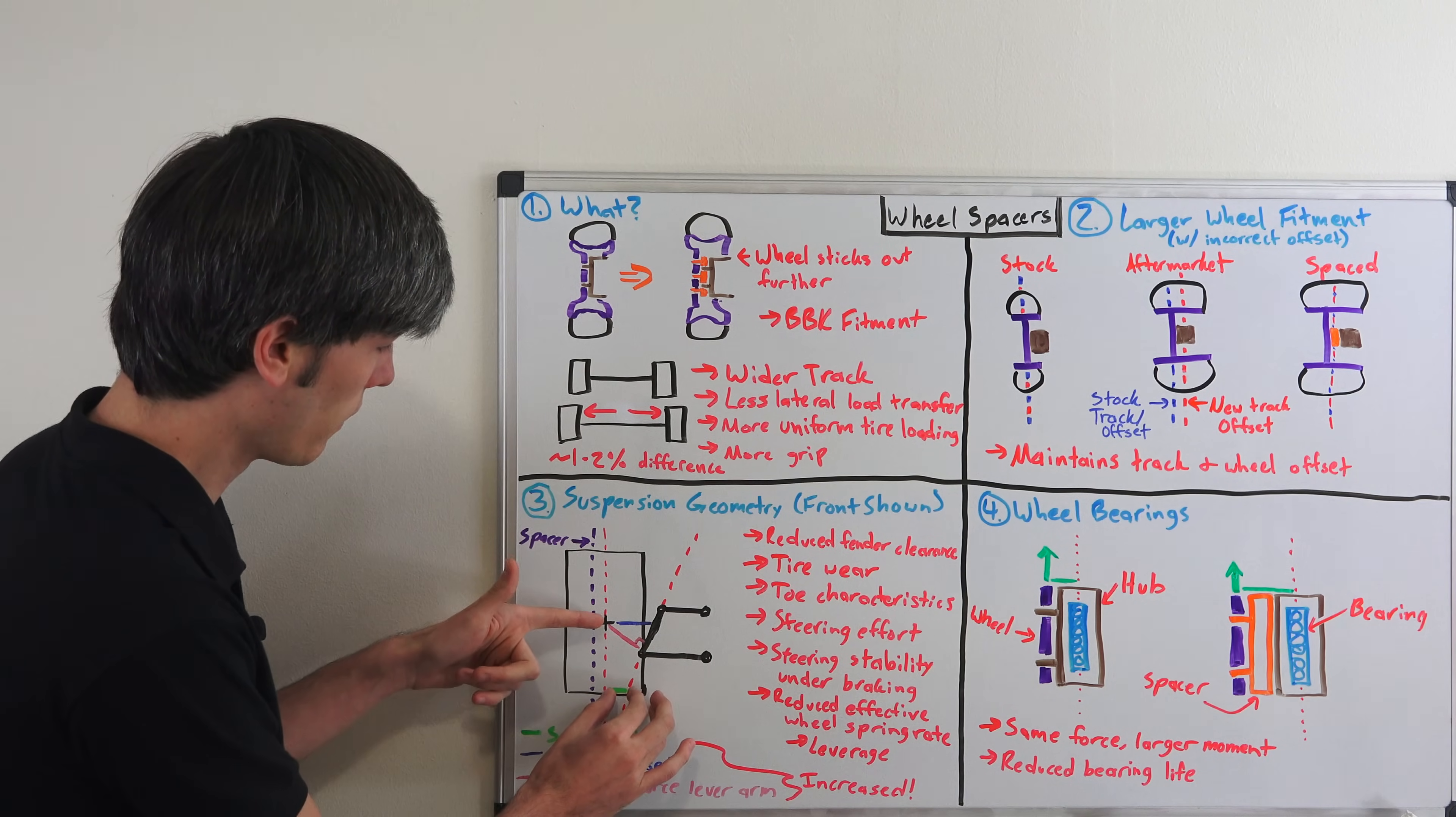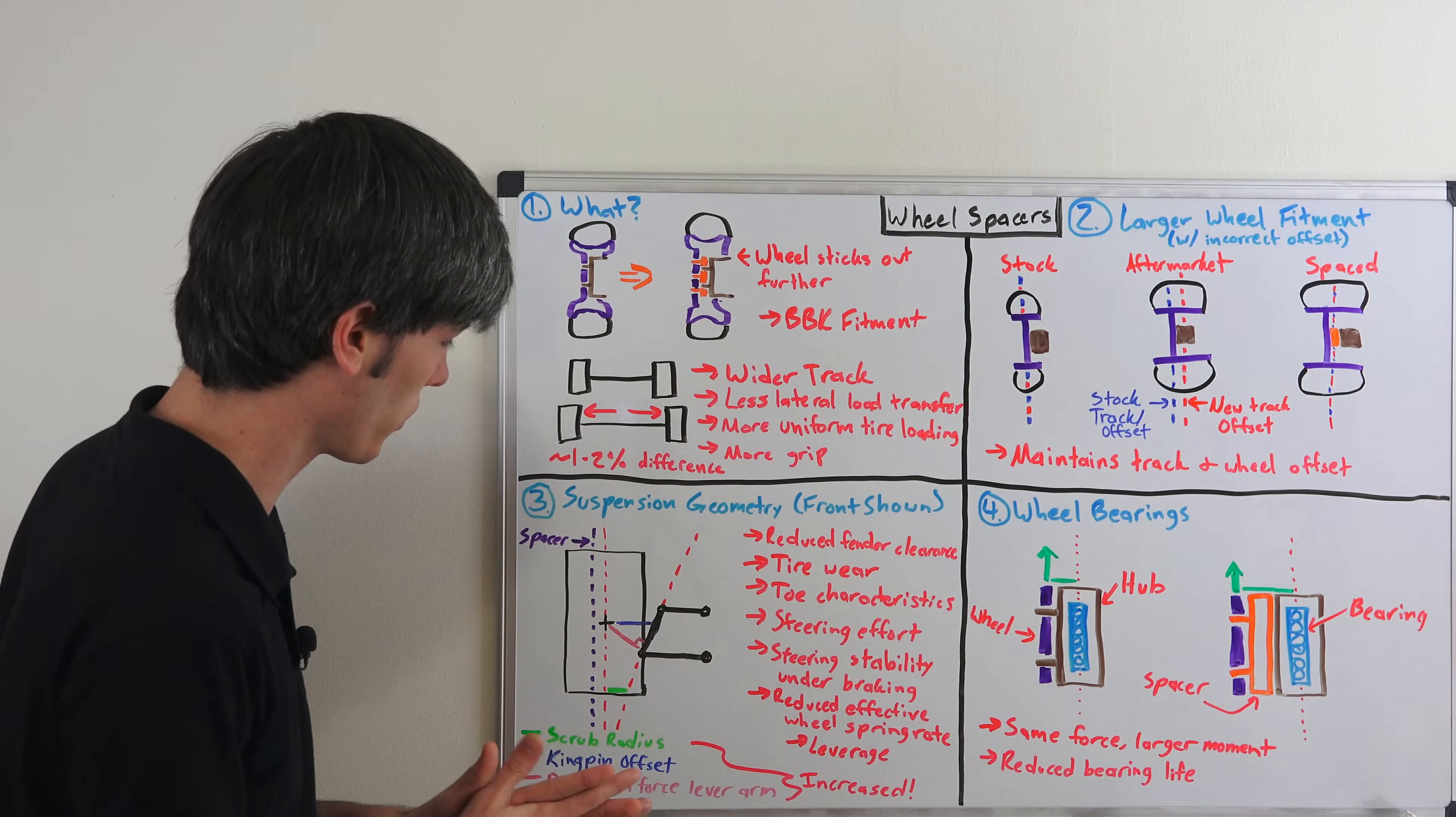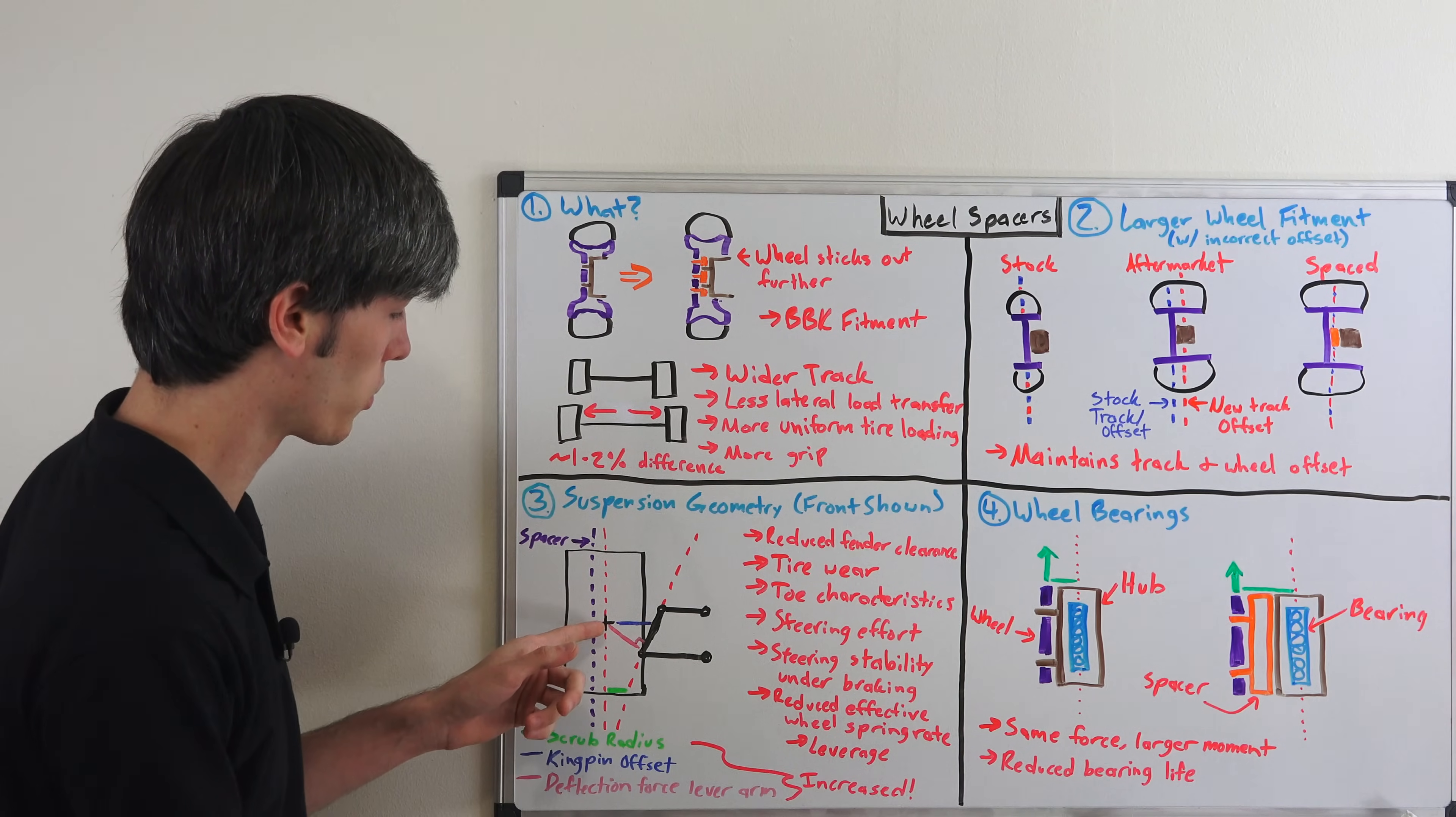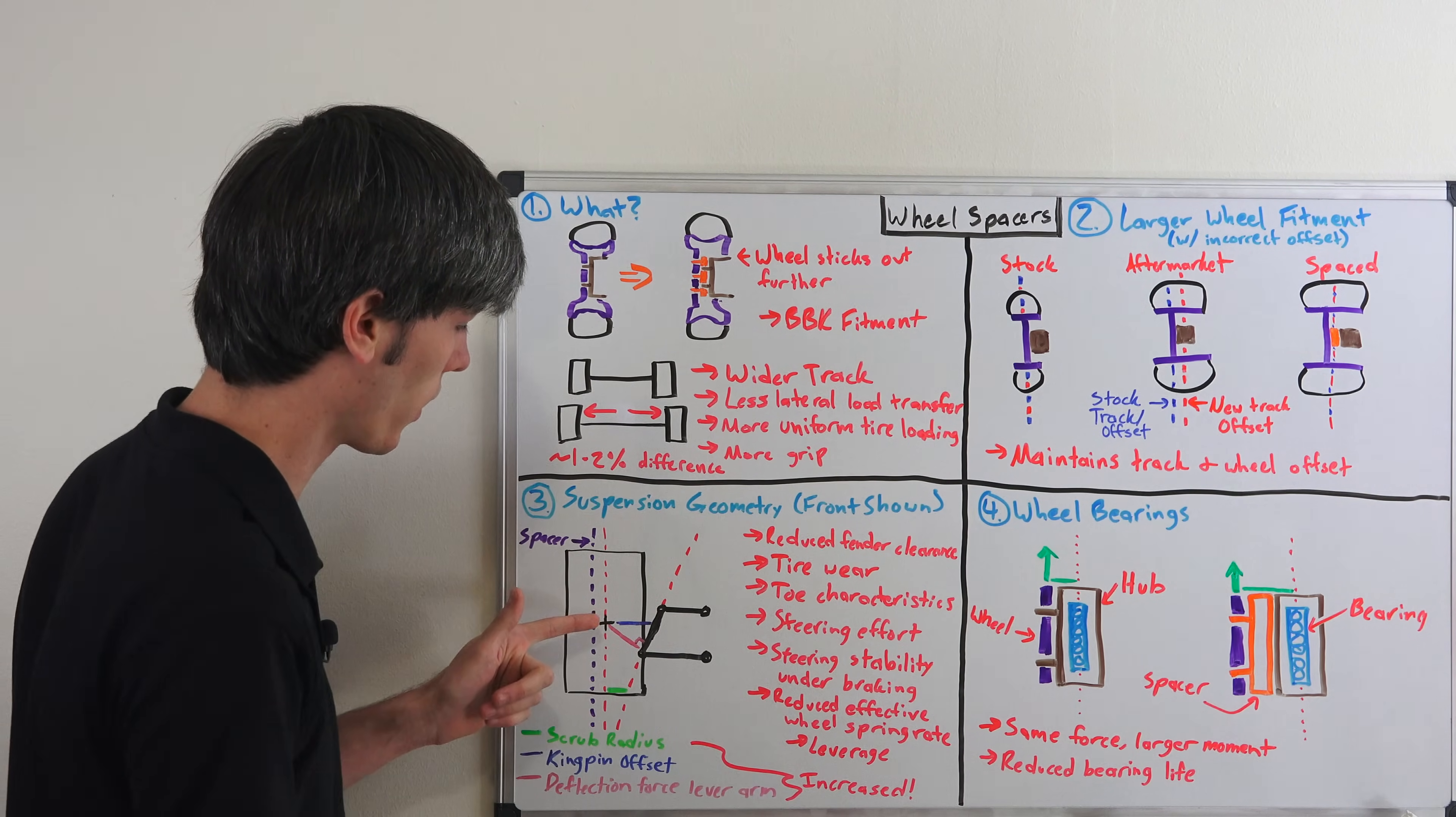But, so as you can see, if you add a spacer, you're going to be increasing the positive scrub radius, which isn't necessarily a desirable thing to do. You're also going to be increasing the kingpin offset. So that's the distance between the center of the tire and going all the way over to the kingpin axis horizontally.